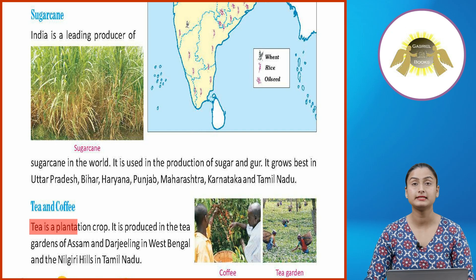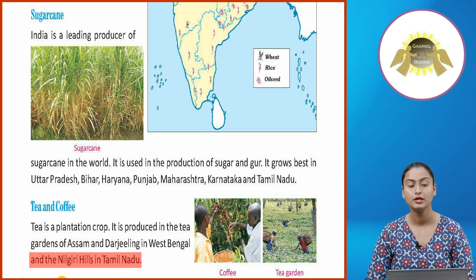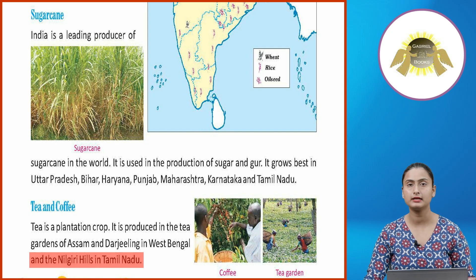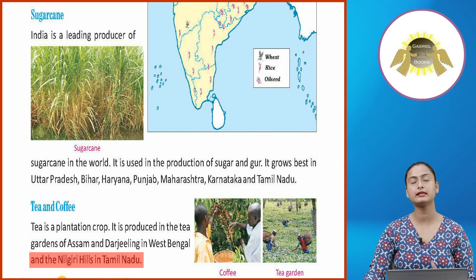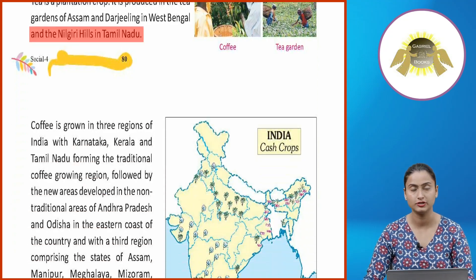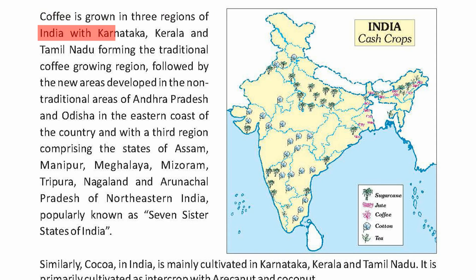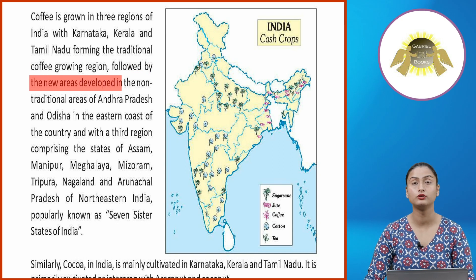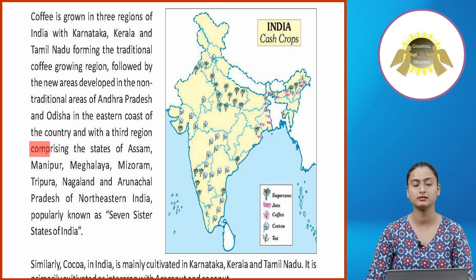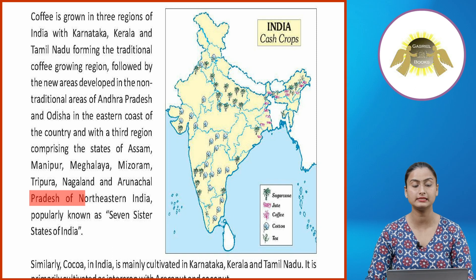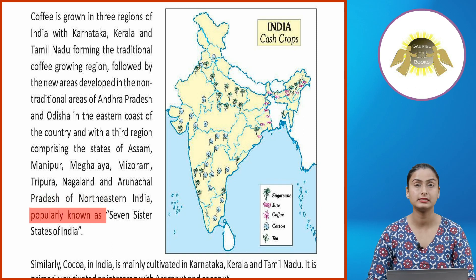Tea is a plantation crop. It is produced in the tea gardens of Assam and Darjeeling in West Bengal, and the Nilgiri Hills in Tamil Nadu. Coffee is grown in three regions of India — Karnataka, Kerala and Tamil Nadu form the traditional coffee-growing region, followed by non-traditional areas in Andhra Pradesh and Odisha, and the Northeastern states including Assam, Manipur, Meghalaya, Mizoram, Tripura, Nagaland and Arunachal Pradesh, popularly known as the Seven Sisters States of India.